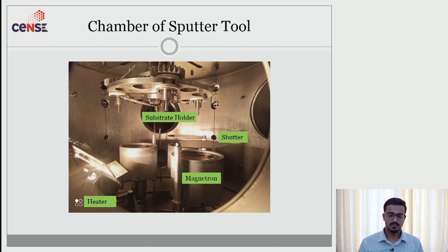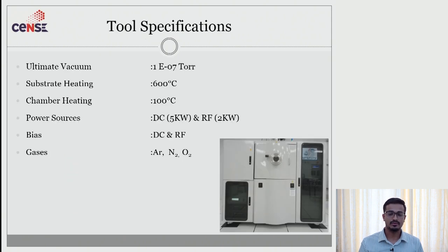Now we will talk about our tool specifications. Our tool can achieve an ultimate vacuum of 1E-7 and our substrate can be heated up to 600 degree Celsius with the help of localized substrate heater. Chamber heating can be up to 100 degree Celsius and the power source that we are using here is DC, pulse DC and RF source. We can also bias our substrates with RF and DC. The gases that we are going to use are argon, nitrogen for nitride deposition, oxygen for oxide deposition.